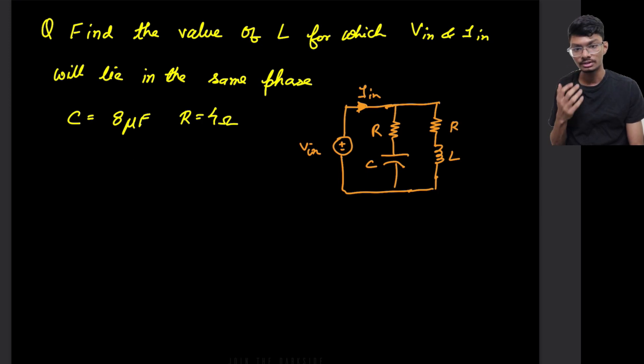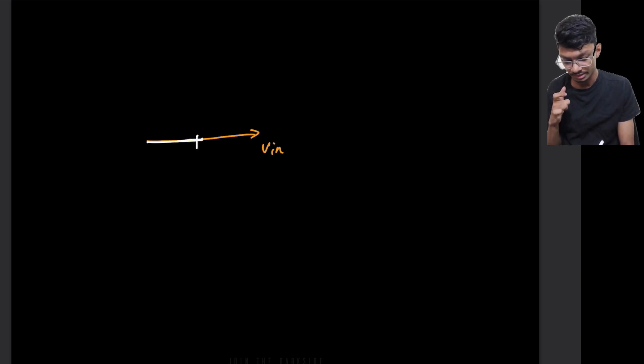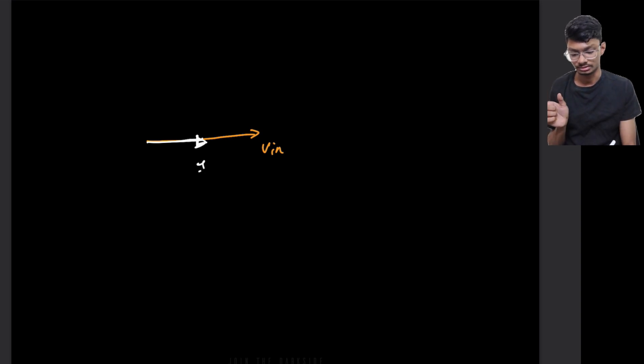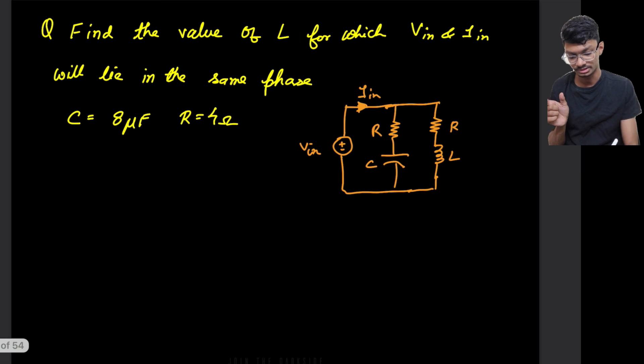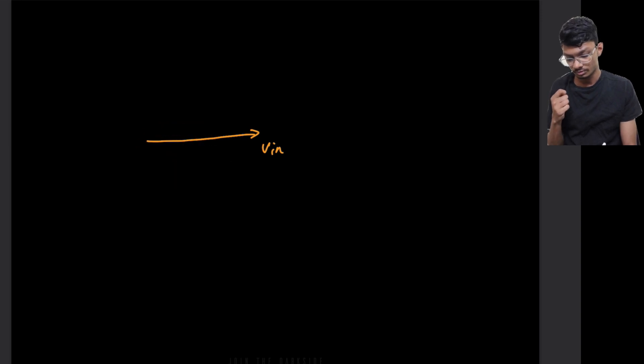What does same phase mean? If you have studied phasor diagrams you will be able to relate. Basically, same phase means if we take Vin as a reference, then Iin should also lie in the same plane as Vin — it shouldn't have any angle with the reference. This Iin is basically the input current, and Iin and Vin should lie in the same phase.